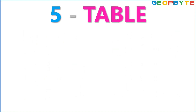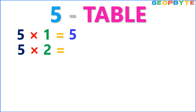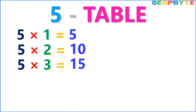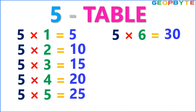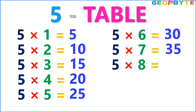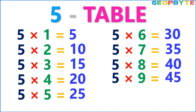Now let us see the 5 table. 5 1s are 5. 5 2s are 10. 5 3s are 15. 5 4s are 20. 5 5s are 25. 5 6s are 30. 5 7s are 35. 5 8s are 40. 5 9s are 45. 5 10s are 50.